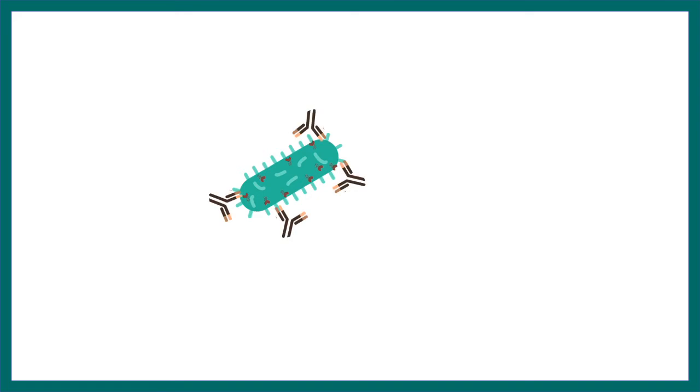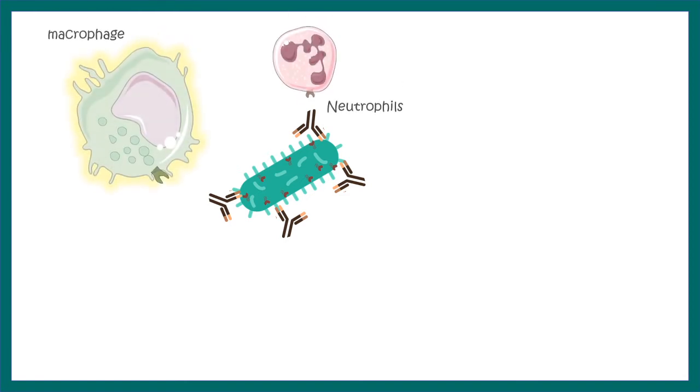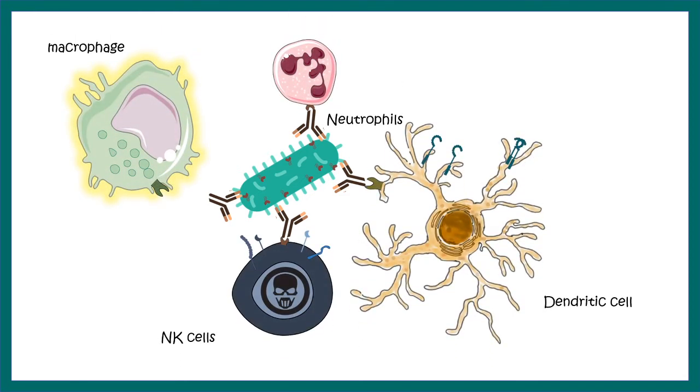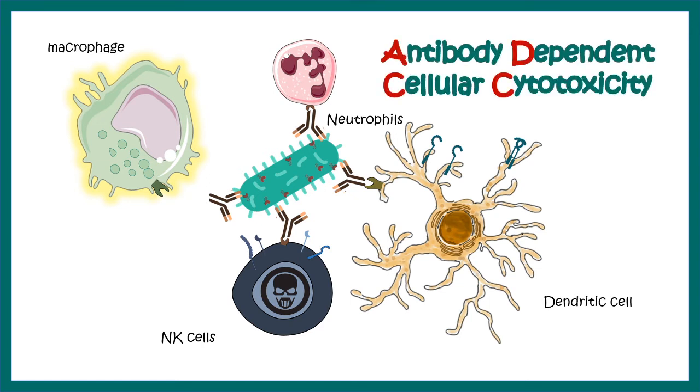Once these antibodies are produced, they can coat and opsonize the bacteria, or neutralize them. This makes it difficult for bacteria to affect other cell types in the body. Moreover, there are many immune cell types, such as macrophages, neutrophils, dendritic cells, or NK cells, which have receptors against the Fc portion of these antibodies. They can bind to that antibody and engulf the pathogen. This is known as antibody-dependent cellular cytotoxicity. By this response, the body can fight back bacteria.